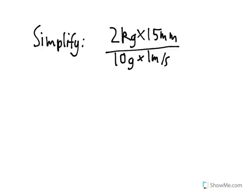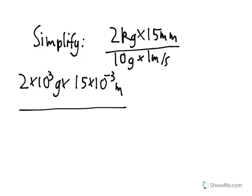Okay, so the first step we want to do is we want to get rid of the prefixes. So instead of 2 kilograms, we'll say that's 2 times 10 to the third grams, because kilo means 10 to the third, times 15 times 10 to the negative third meters, because milli means negative third. And that's over 10 grams times 1 meter per second.